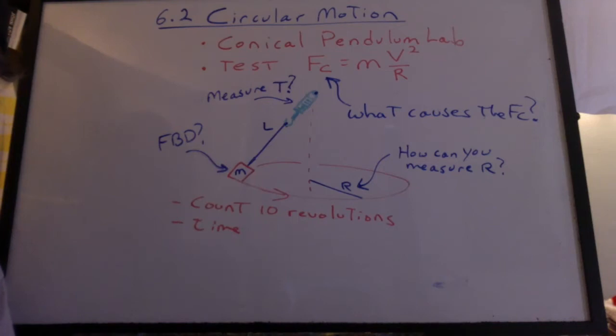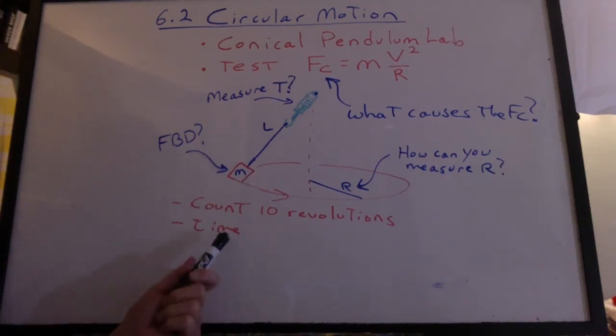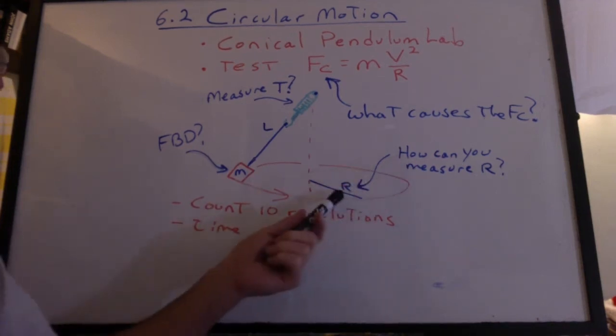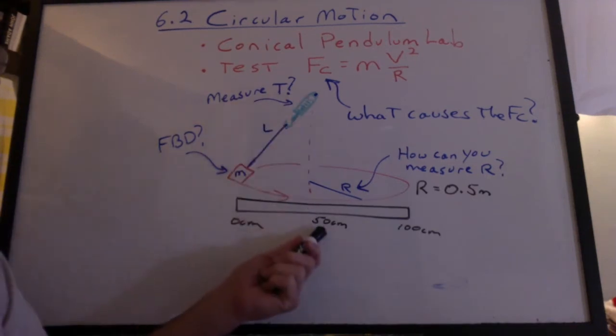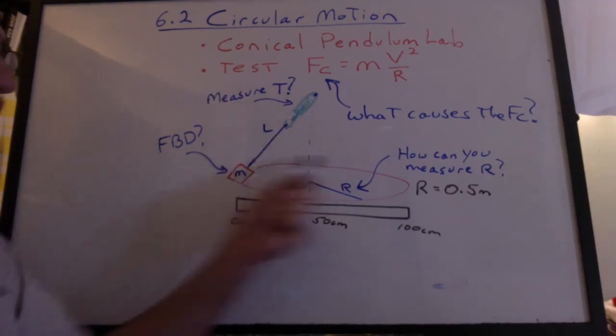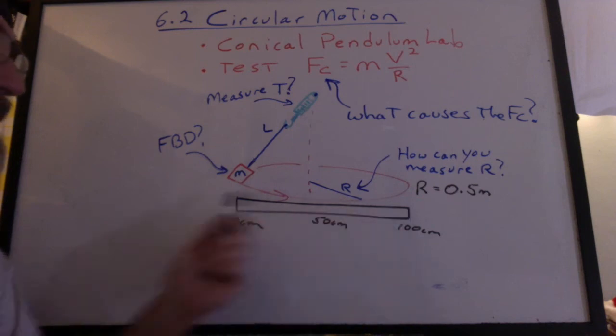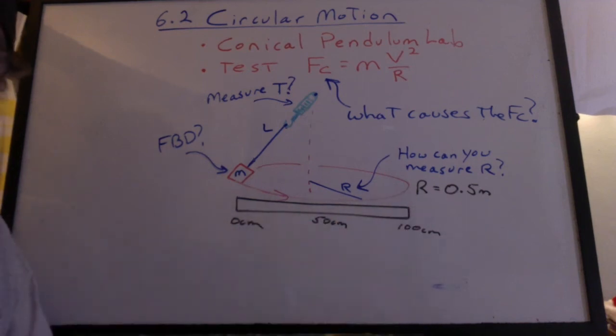So how'd you make out with the lab? The easiest way to get the time is probably to record it on the phone, upload it to YouTube, play it back in slow motion. Measuring the radius, if your hand is over the 50 centimeter mark and now you know the weights went over the end of the meter stick, then the radius is 0.5 meters.